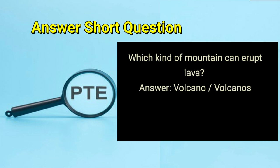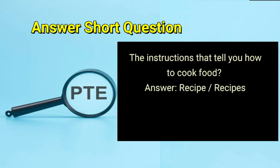Which kind of mountain can erupt lava? Answer: volcano or volcanoes. What are the instructions that tell you how to cook food? Answer: recipe or recipes.